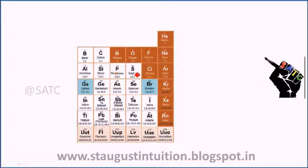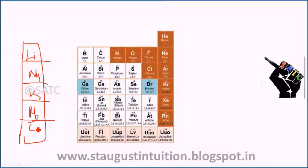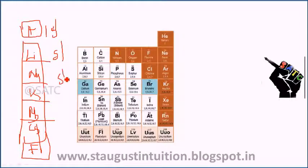We are going to discuss the first group. In the first group, we have Lithium, Sodium, Potassium, Rubidium, Cesium, and Francium. Hydrogen is also in this group, but Hydrogen is 1s1. Hydrogen is not a metal — it is one exception.